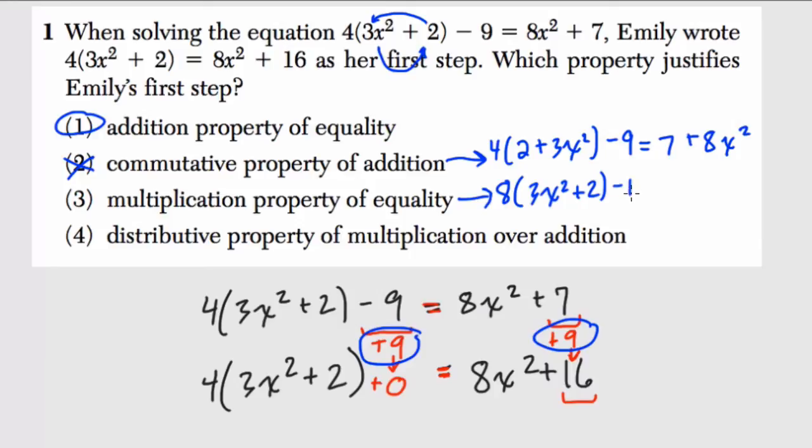Instead of minus 9, I'd have minus 18. Instead of 8x squared, I have 16x squared. And instead of 7, I'd have 14. So in this case, because I doubled everything, or multiplied everything by 2, I'm using the multiplication property of equality. That's not what we're doing here.